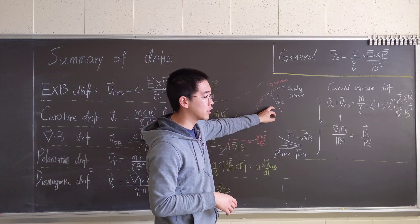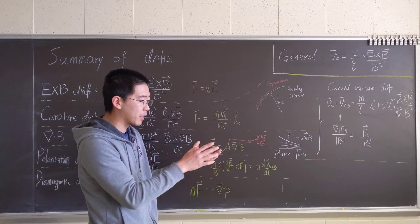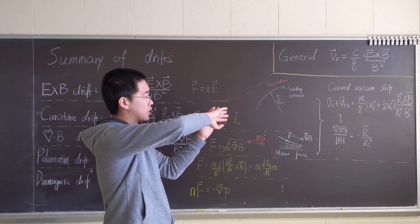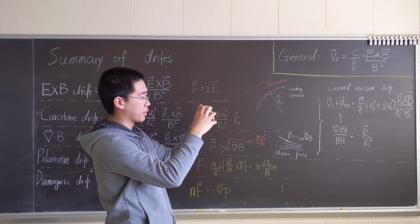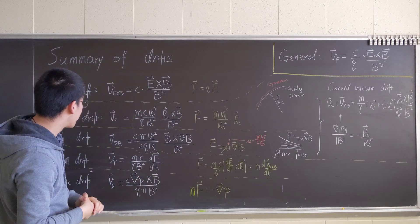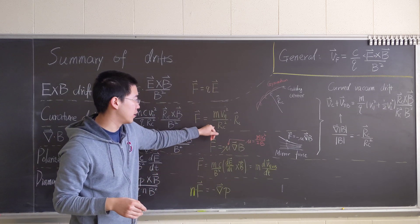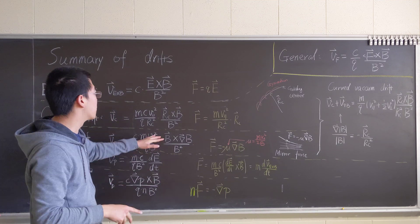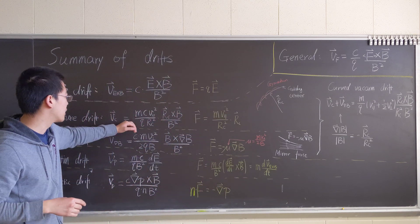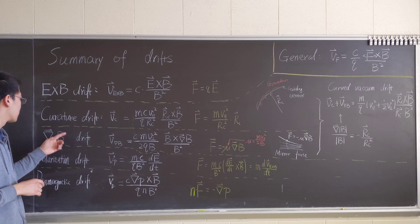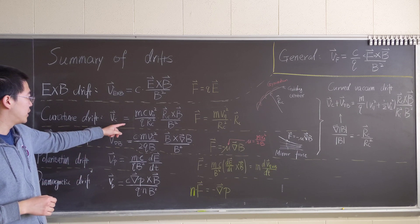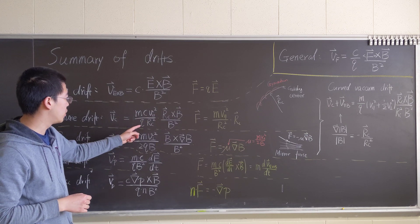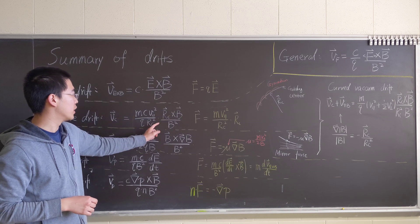R_c is the radius of curvature — the bigger R_c is, the more slowly trending it is; the smaller it is, the circle becomes smaller. The centrifugal force can be written in this form, as you know from classical mechanics. Plugging this into the general formula, the curvature drift v_c equals m over q times v_parallel squared over R_c squared, times R_c cross B over B squared.